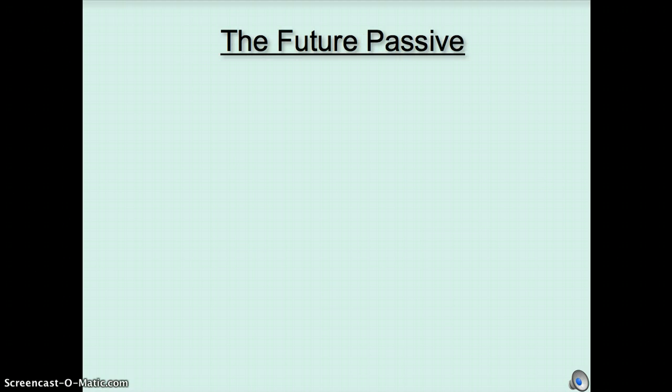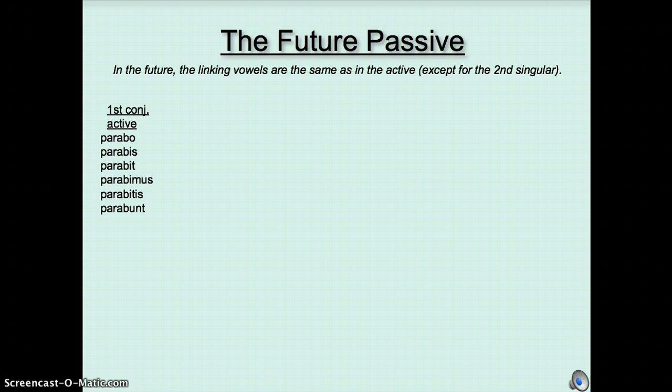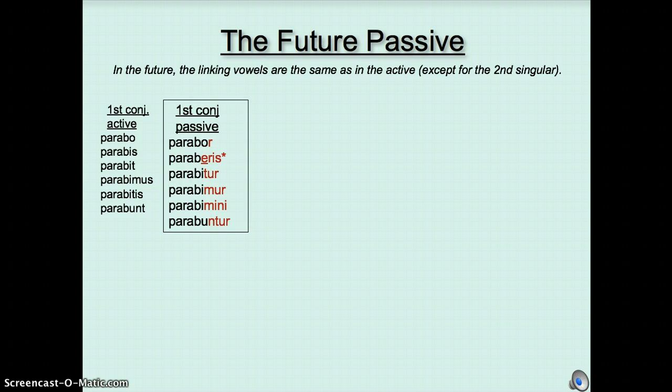This is what the future passive looks like. There are a couple of exceptions in here, and we still have to worry about the bo, bis, bit for the first and second conjugation versus the am, es, et for the third and fourth conjugation. So where we had parabo, parabis, parabit, parabimus, parabitis, parabunt, we now have parabor, paraberis, parabitur, parabimur, parabimini, parabuntur. Slight exception in the second singular.